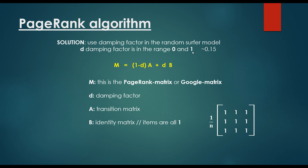The damping factor is in the range 0 and 1, and it is usually initialized to be 0.15. We are going to construct the so-called PageRank matrix or Google matrix M, which equals (1 minus the damping factor) times A, where A is the transition matrix, plus the damping factor multiplied by a matrix B. B is an identity matrix where all items equal 1, multiplied by 1 divided by N, where N is the number of websites. This Google matrix M has the same properties as A — it is column stochastic, meaning the sum of values in any column equals 1.